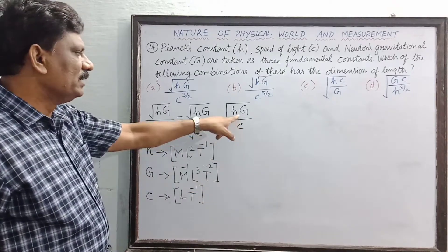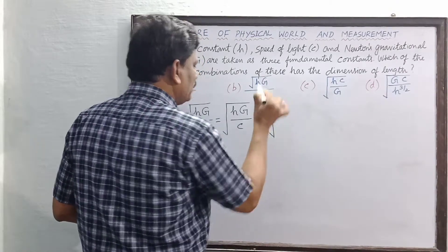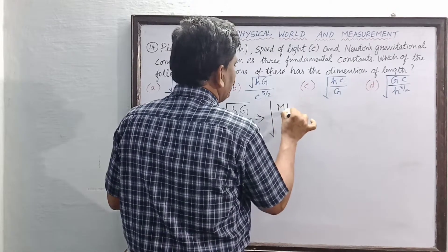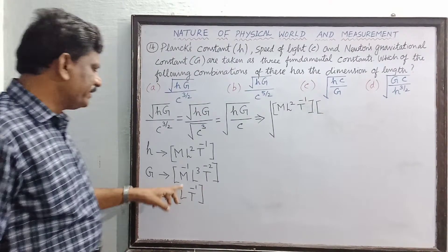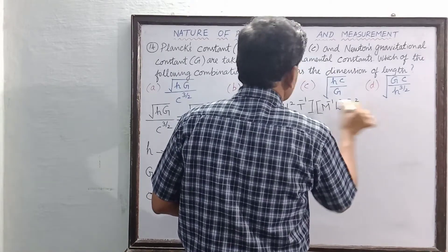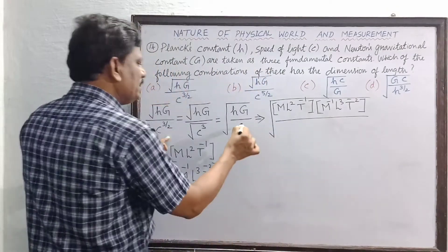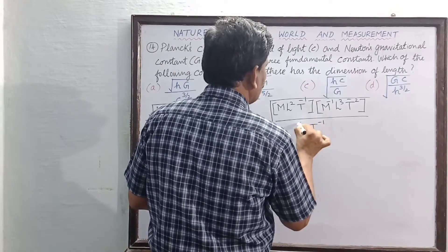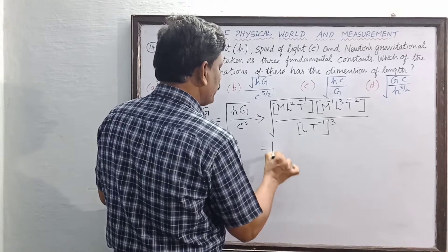Now substituting these into Option A: square root of [ML²T⁻¹ × M⁻¹L³T⁻²] divided by [LT⁻¹]³. The denominator C cubed means [LT⁻¹]³, which gives L³T⁻³ in the denominator.